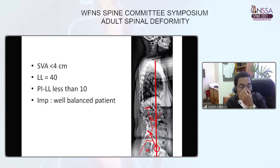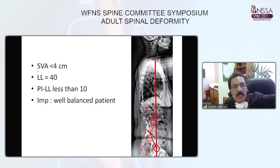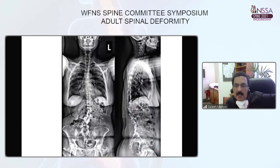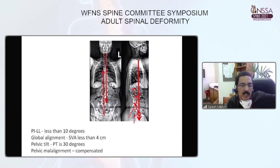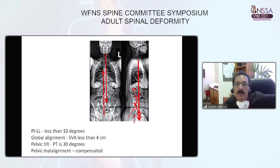In a first example, all lines are drawn on the X-ray: SVA is less than 4 cm, lumbar lordosis is 40 degrees, and PI minus LL is less than 10, indicating a well-balanced patient. In a second example, PI minus LL is again less than 10 degrees and SVA is less than 4 cm, which is good. However, pelvic tilt is 30 degrees, indicating pelvic malalignment that is compensated.